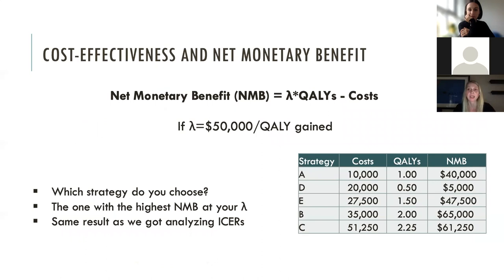Equivalently, one can use net benefit — either net monetary benefit or net health benefit. Net monetary benefit equals QALYs from the strategy multiplied by the willingness-to-pay threshold, net of costs. The decision rule is to choose the strategy with the highest net benefit, equivalent to the ICER rule. The optimal strategy in our example is also strategy B. This approach is very powerful when analyzing heterogeneity and uncertainty among multiple strategies, as often encountered with diagnostic test evaluations.